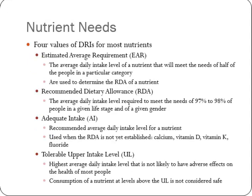There's the estimated average requirement, which is the average daily intake level of a nutrient that will meet the needs of half the people in a regular category. What we hear all the time and see on the sides of boxes is the RDA — sometimes called the US RDA — the Recommended Daily Allowance, which is the intake level necessary to meet the needs of virtually all people given a given stage of life and gender. The RDA may be different for men and women, children or elderly persons, and pregnant women.